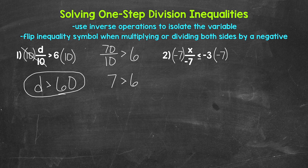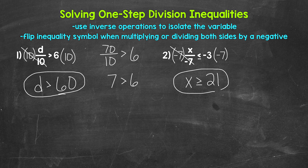We are multiplying both sides by negative 7. On the left side, these negative 7s cancel each other out, so x is now isolated. The inequality symbol has flipped. And then on the right side, negative 3 times negative 7 gives us positive 21. Remember, a negative times a negative equals a positive. So this is our answer: x is greater than or equal to 21. In other words, x can be anything greater than 21 or equal to 21.